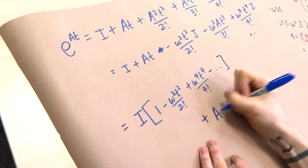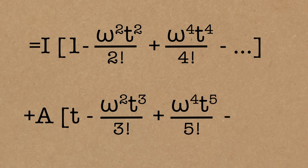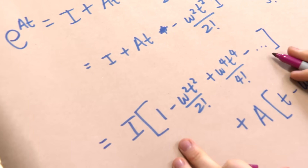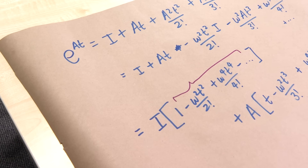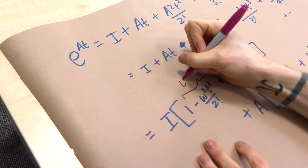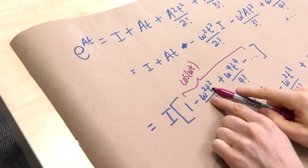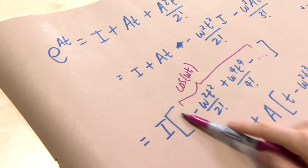Plus A times (t minus ω² t³/3! plus ω⁴ t⁵/5! ...) and that carries on. So we've factored out the matrices. Now this first bracket should be familiar — this is the infinite expansion of cosine. This is cos(ωt), because it's the even powers: (ωt)², divided by the power factorial, with alternating signs, exactly the cosine series.